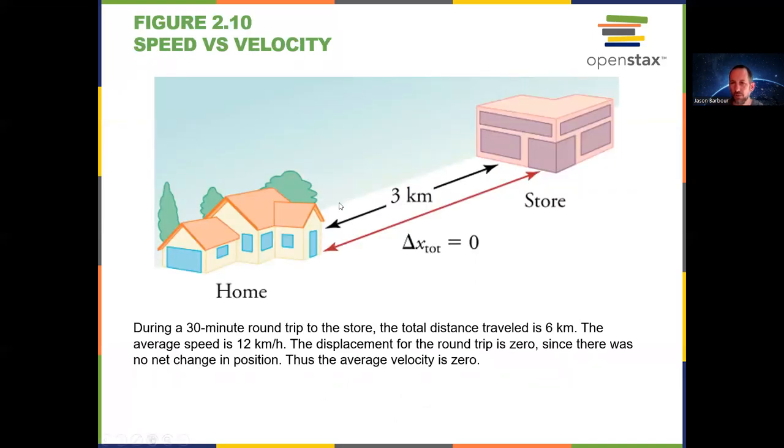An example to help you understand the difference between average speed and average velocity. We have somebody who leaves their house. They go three kilometers this direction. We'll call that the positive direction. And then they go three kilometers back in the negative direction. They end up in the same place. Well, they traveled six kilometers. That's the distance traveled. And it says down here it took them 30 minutes and 30 minutes is half an hour or 0.5 hours. So six kilometers divided by half an hour is 12 kilometers per hour. That's the average speed. However, if we look at the displacement for the whole trip, the final position is here and the initial position was here. So that means the displacement was zero. So displacement of zero divided by half an hour, that's zero. The average velocity is zero. So that's average speed versus average velocity.